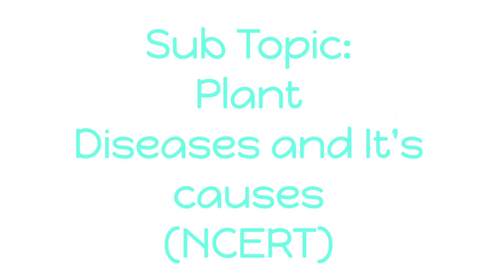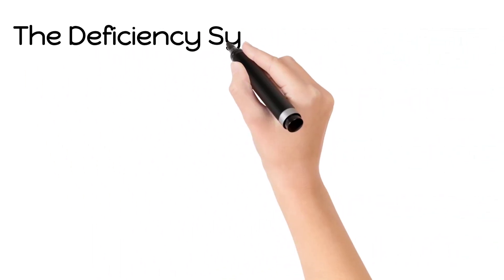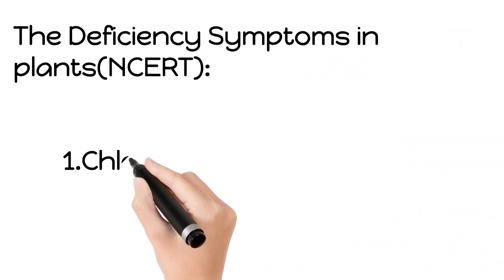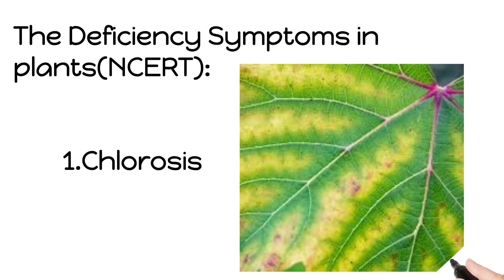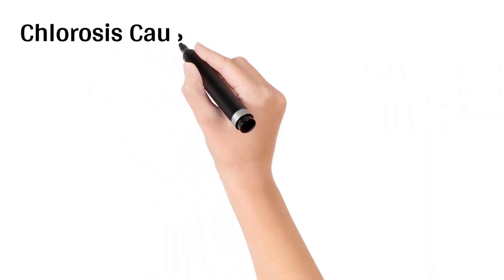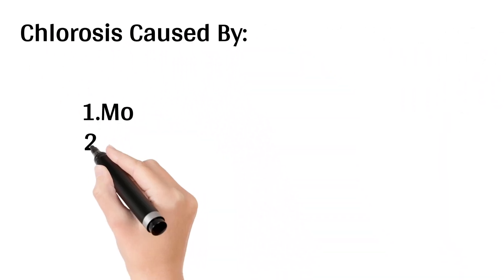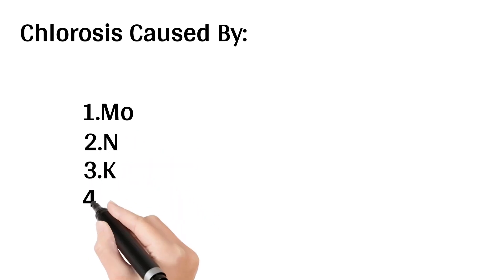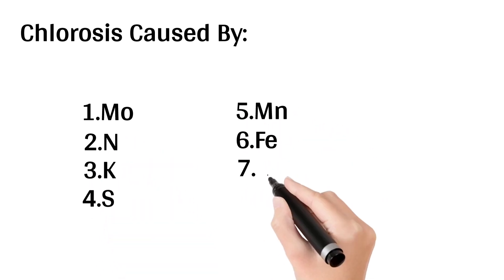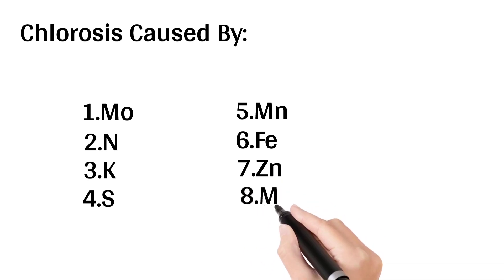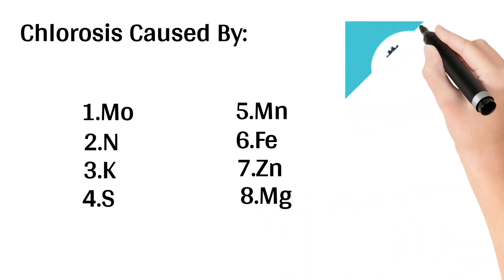The first deficiency symptom is chlorosis — the loss of chlorophyll leading to yellowing in leaves. Chlorosis is caused by the deficiency of eight elements: molybdenum (Mo), nitrogen (N), potassium (K), sulfur (S), manganese (Mn), iron (Fe), zinc (Zn), and magnesium (Mg).